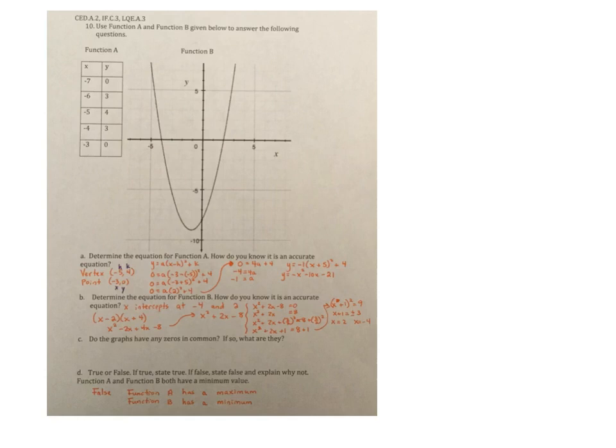All right. Question number 10, use function A and function B below to answer the following. So here's my function A, it is the table. Here's my function B, it is the graph. Okay. Now function A, you have to like, that's what it starts with. Determine the equation for function A. How do you know it's an accurate equation? So you see here, I identified my vertex. And as I looked at here, these cancel each other out in that sense. These have a buddy. This one doesn't have a buddy. Thus my vertex, it is the highest point in my Y column.